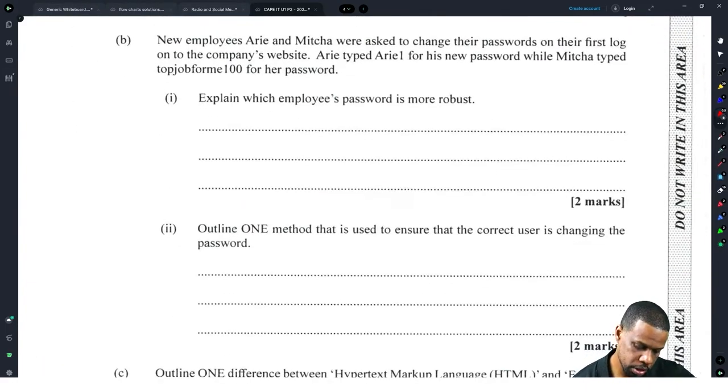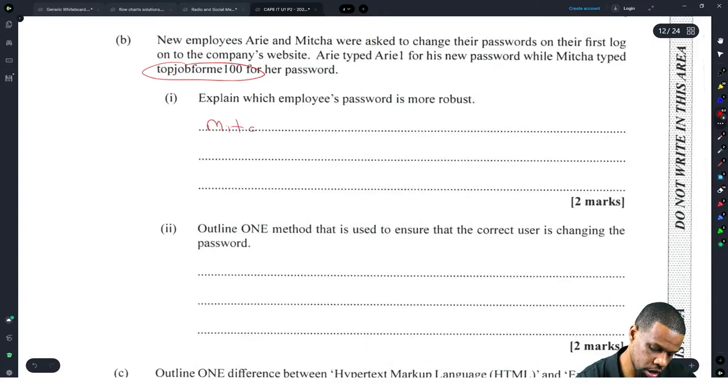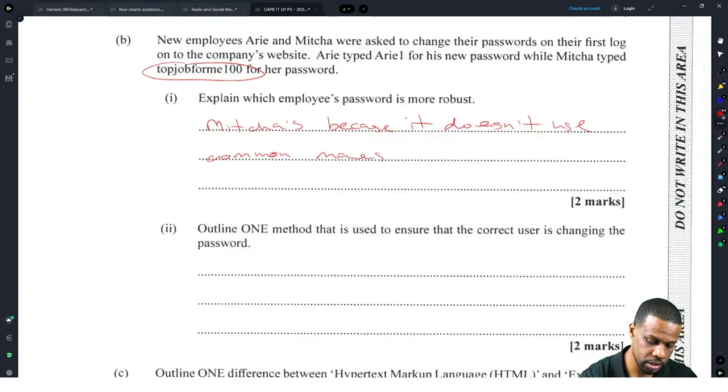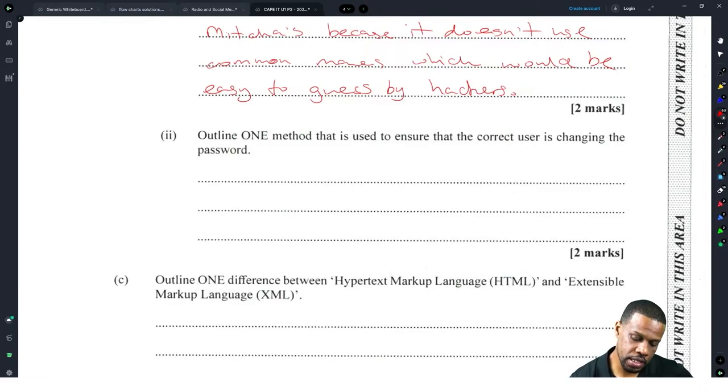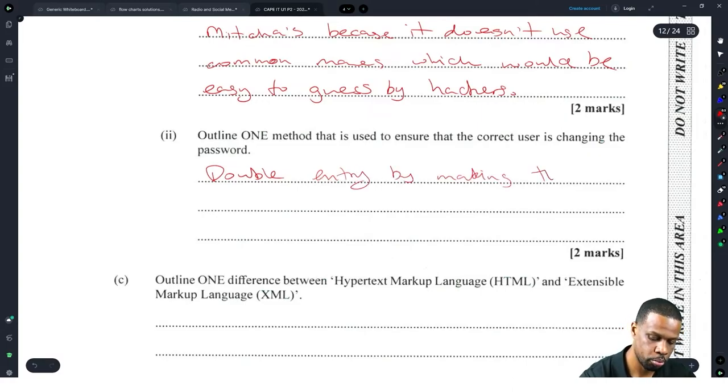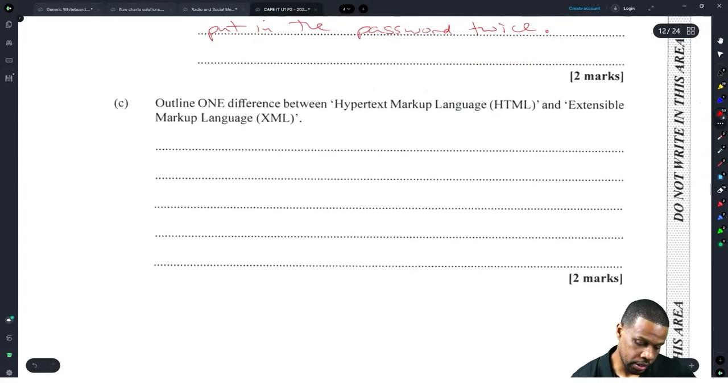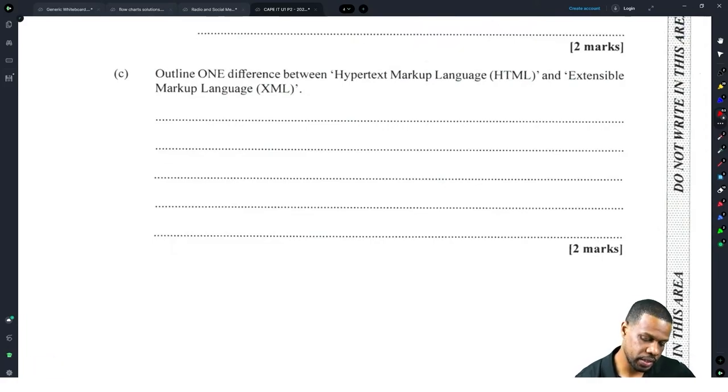New employees Iri and Mishka were asked to change their passwords on their first logon to the company's website. Iri typed 'iri' for his new password, and Mishka typed hers. Which password is more robust? Mishka's, because it doesn't use common names that are easy to guess by hackers. All right, cool. One method to use to ensure that the correct user is changing the password: double entry, by making them put in the password twice.